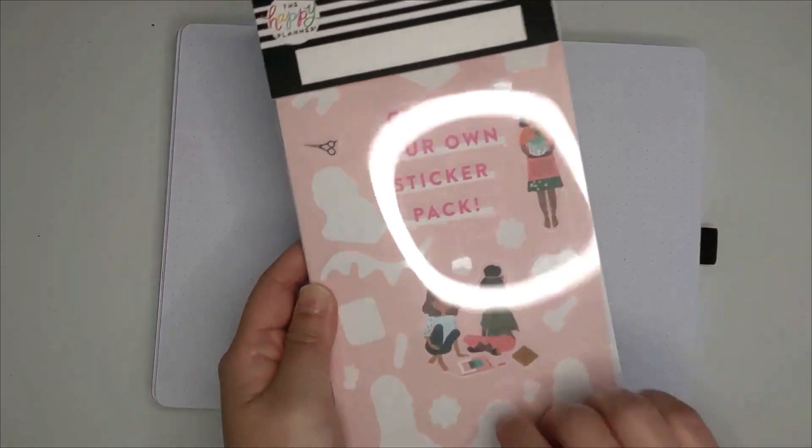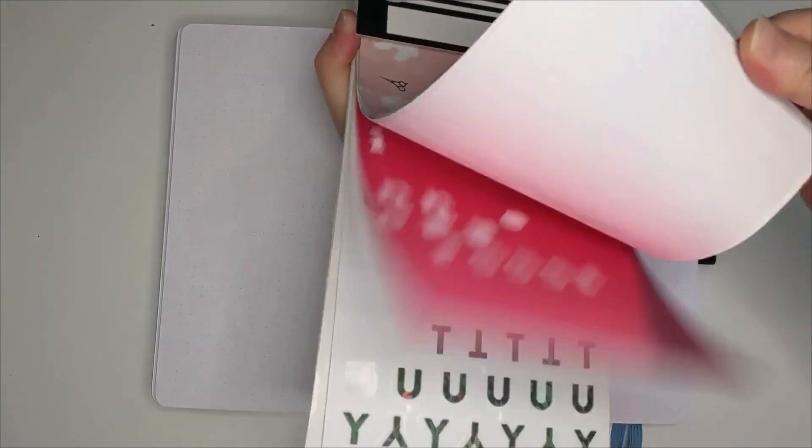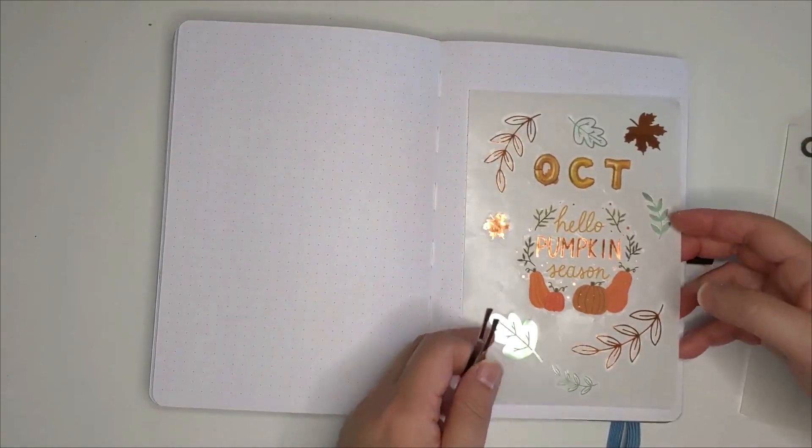When it comes to fall, what comes to mind were holidays like Thanksgiving and Halloween, and then there are things like dry leaves and autumn colors of orange, yellow, and brown. Since Halloween is my daughter's favorite holiday because of the candies, you're going to be seeing a lot of those stickers related to that.